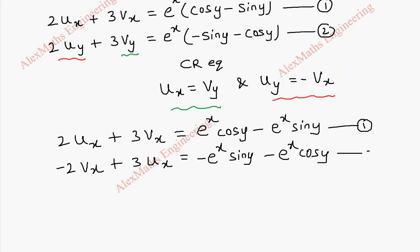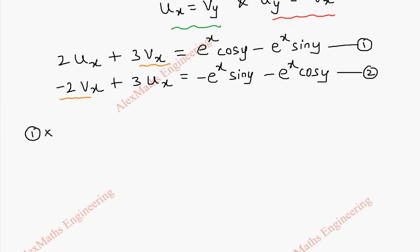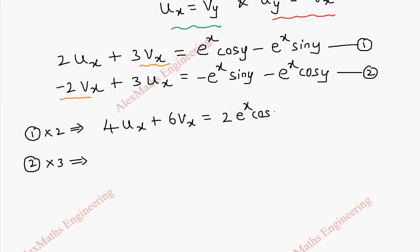Now we have to make the same coefficient for vx so that we can eliminate it. So the first equation we are going to multiply by 2, and the second equation we are going to multiply by 3. The first equation becomes 4ux plus 6vx equal to 2e power x cos y minus 2e power x sin y.